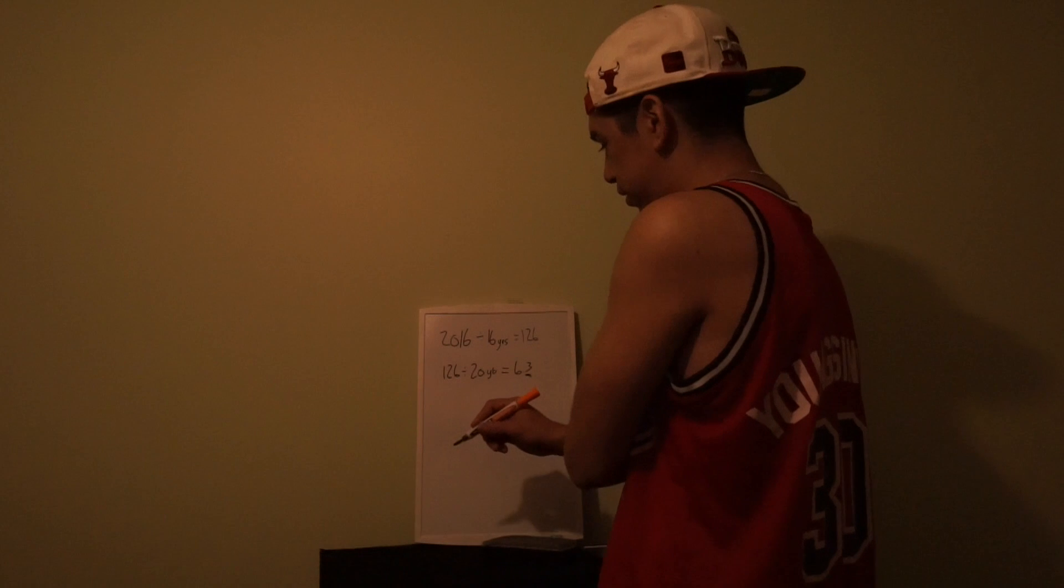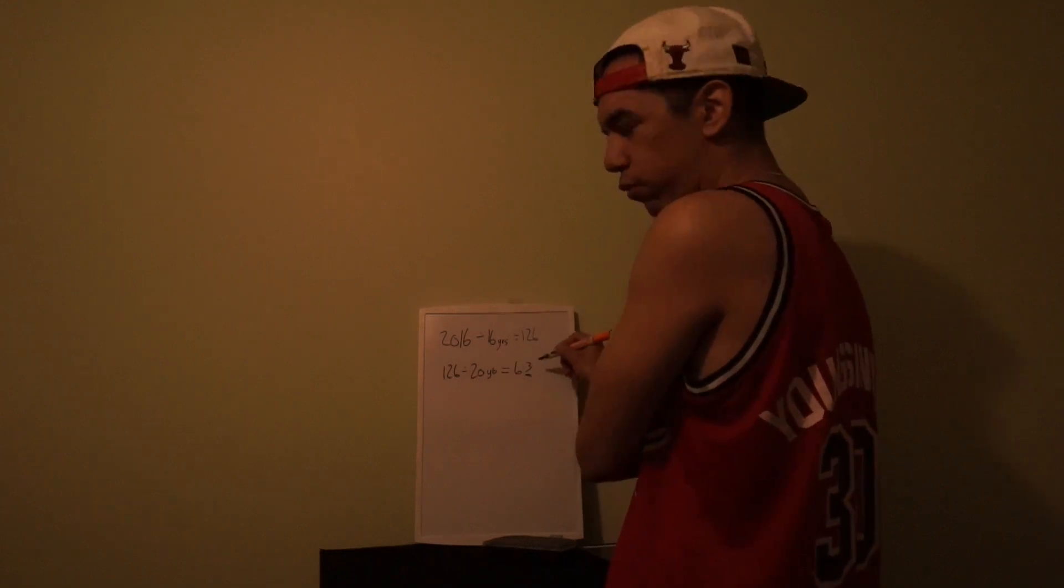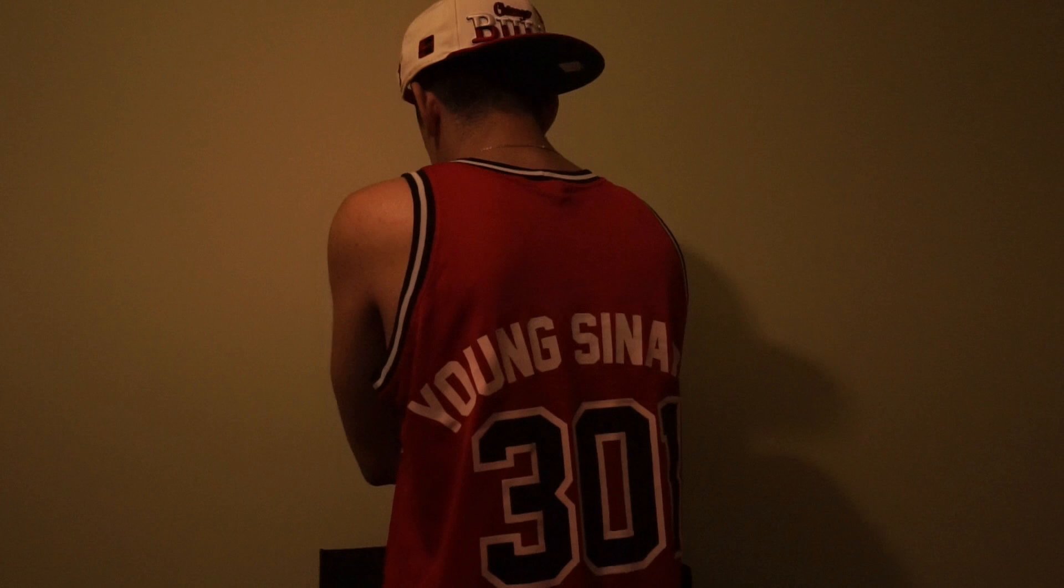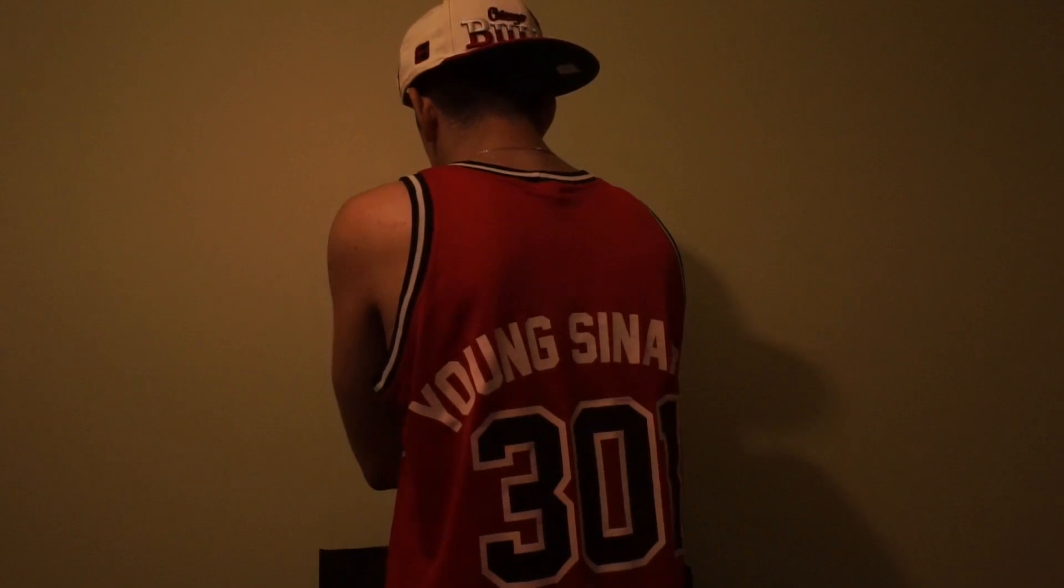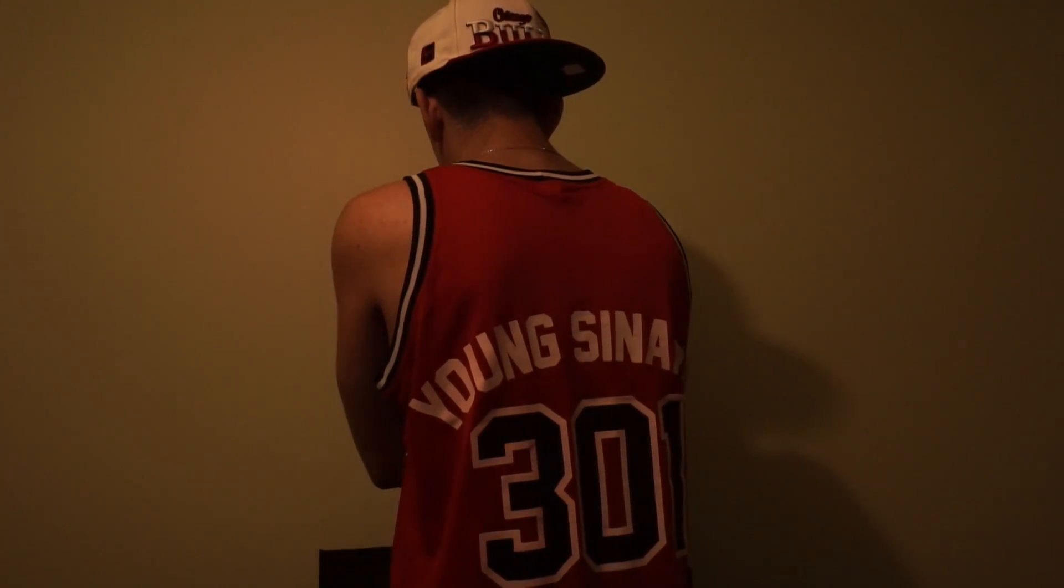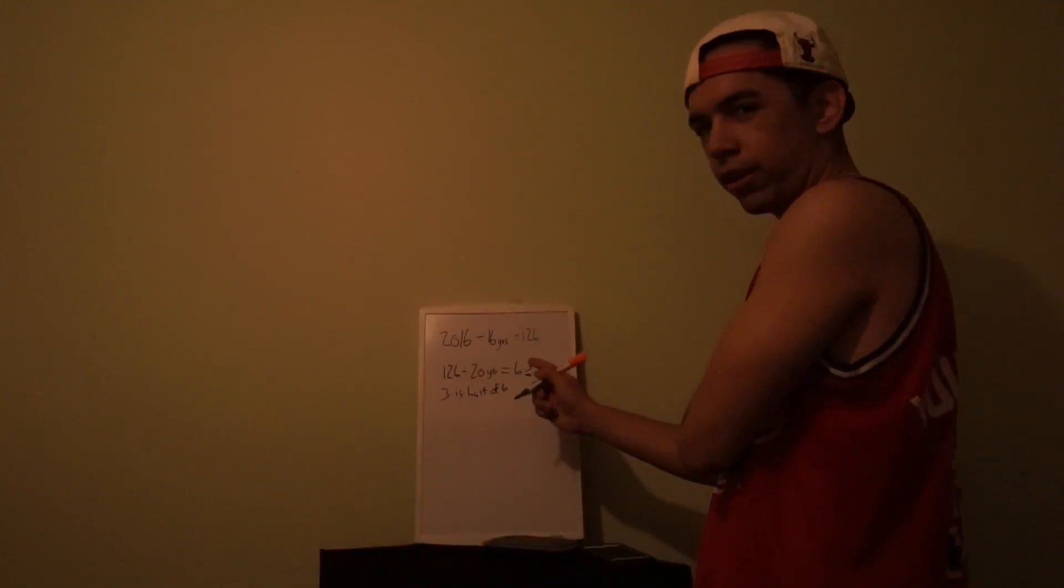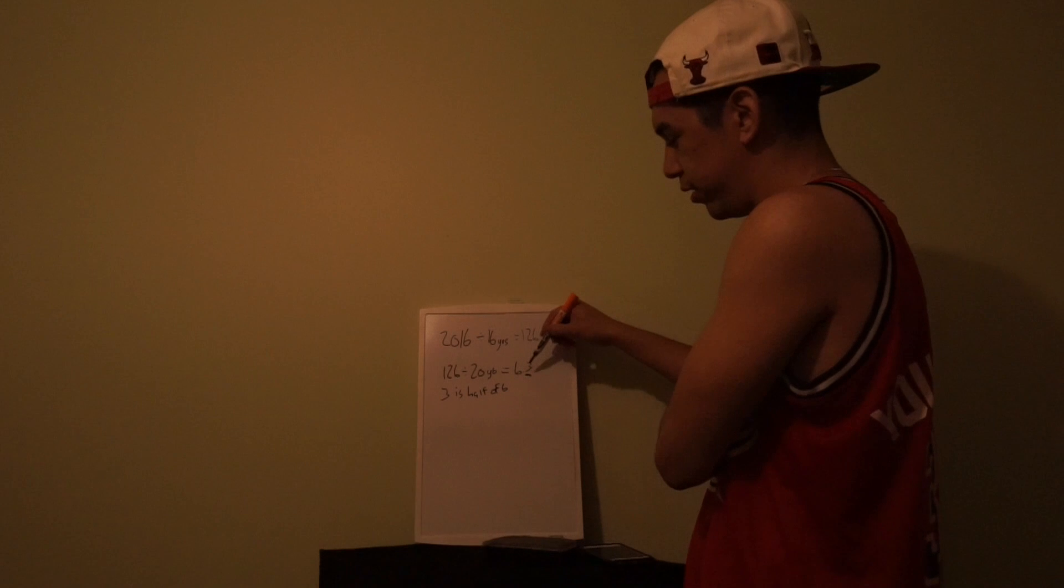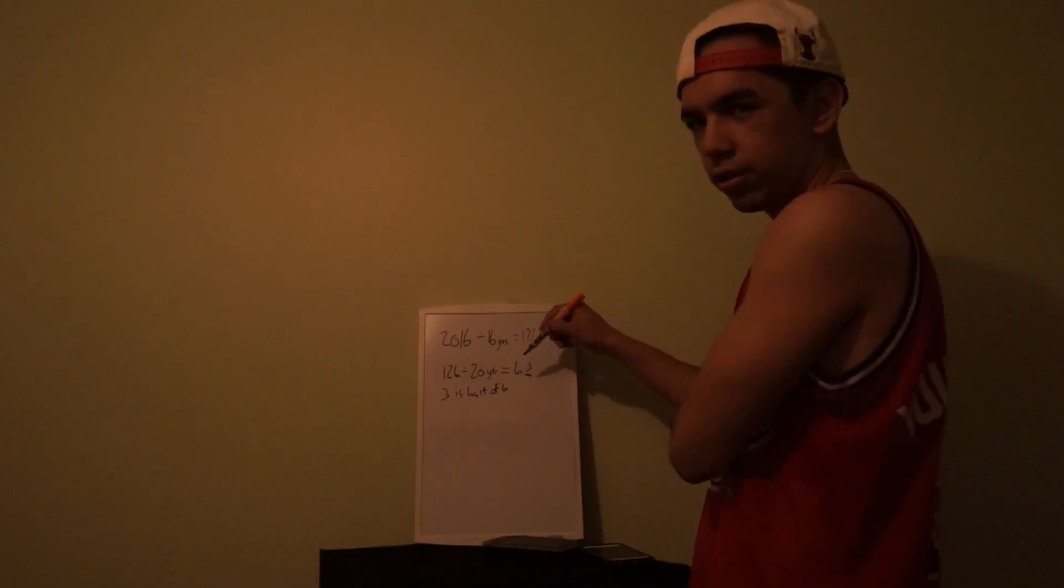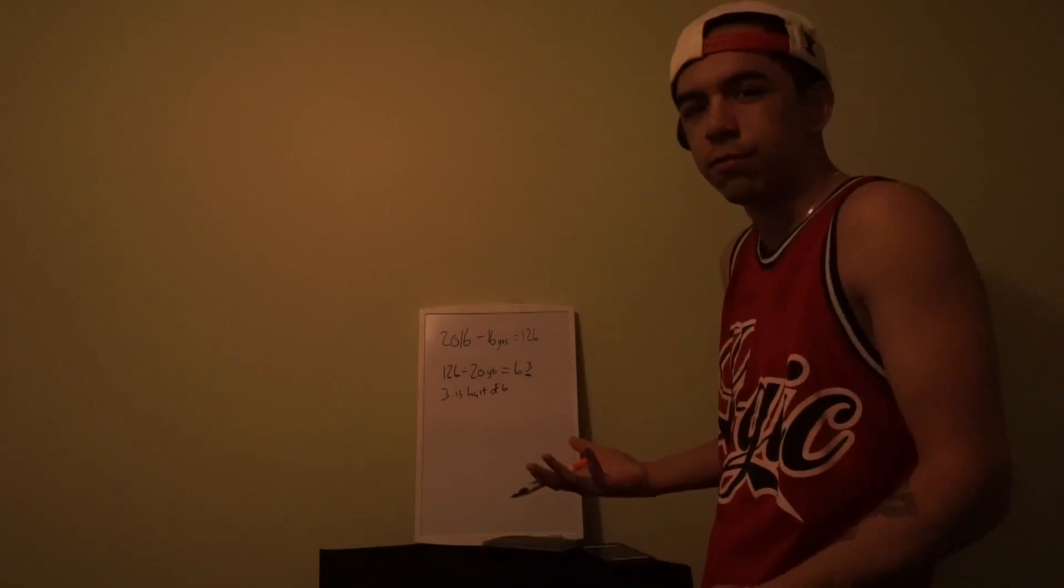Half of six, of this six. So 6.3, this three is half of six. You see where I'm getting that. That's the dot, that's what the dot means, that's why it's a decimal.